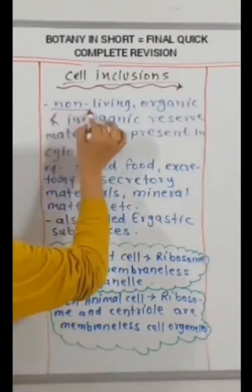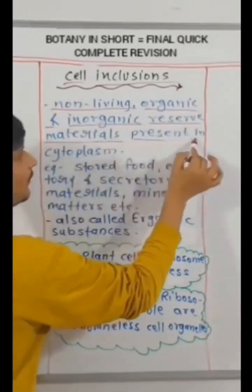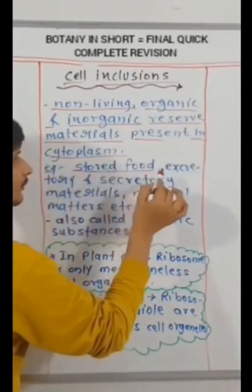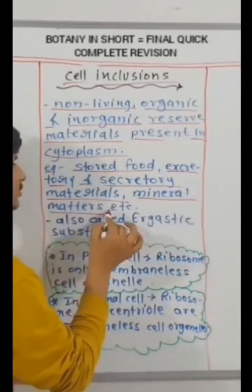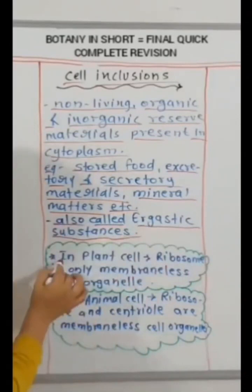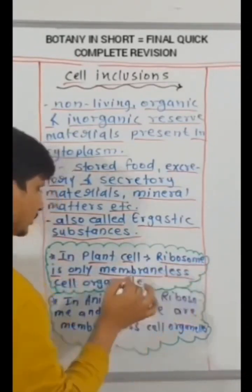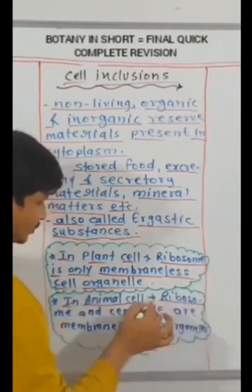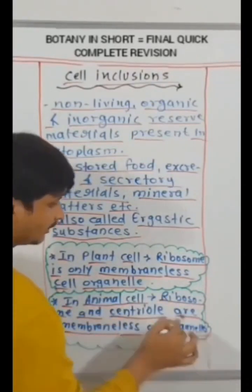Cell inclusions, non-living, organic and inorganic, reserve materials present in cytoplasm. For example, stored food, excretory and secretory materials, mineral matters, etc. Also called ergastic substances. In plant cell, ribosome is only membraneless cell organelle. In animal cell, ribosome and centriole are membraneless cell organelle.